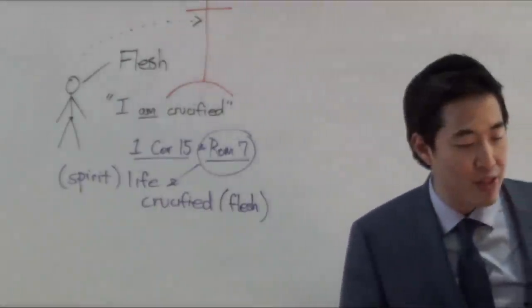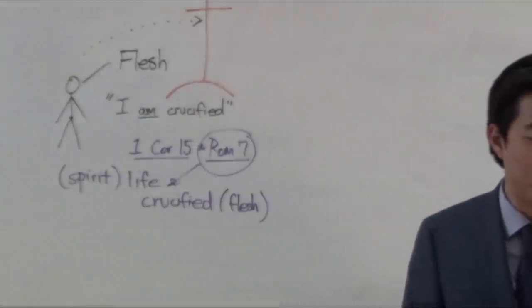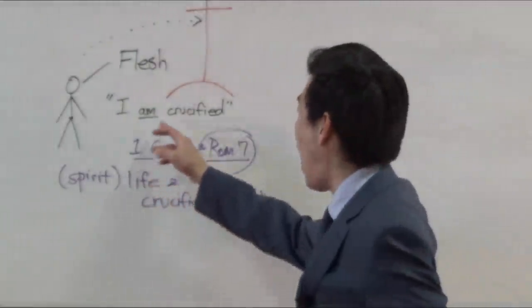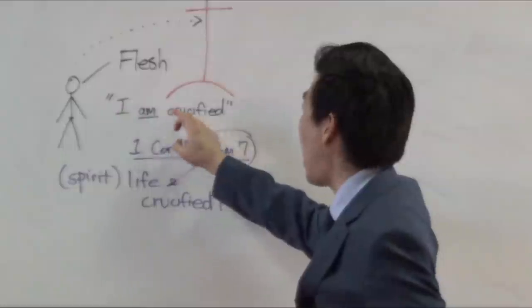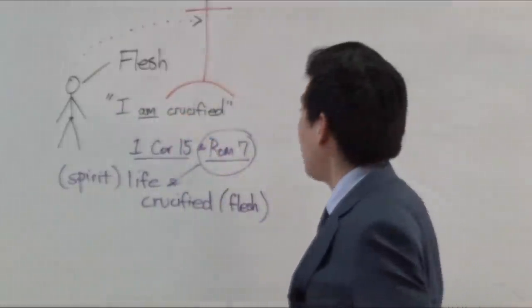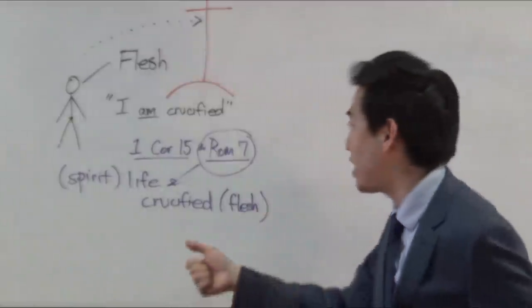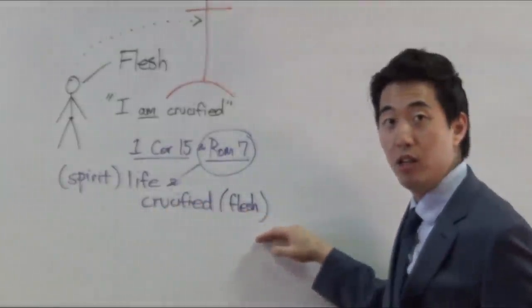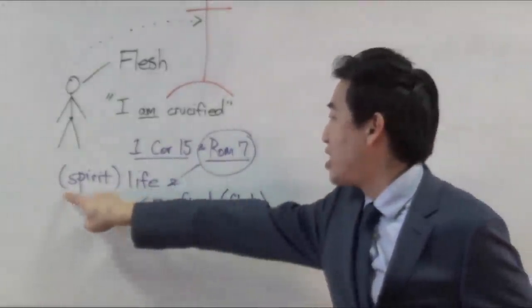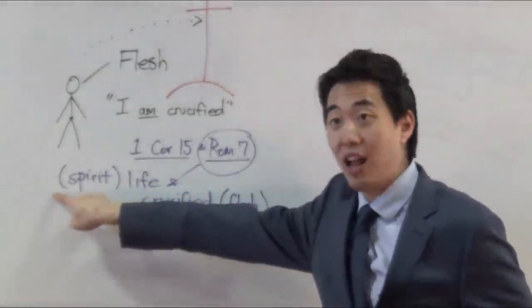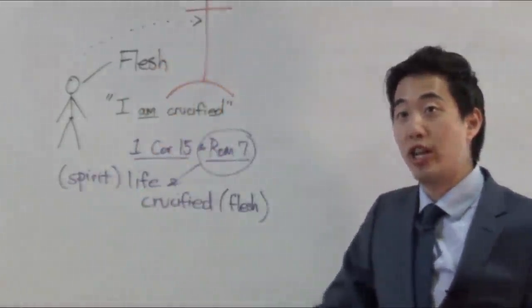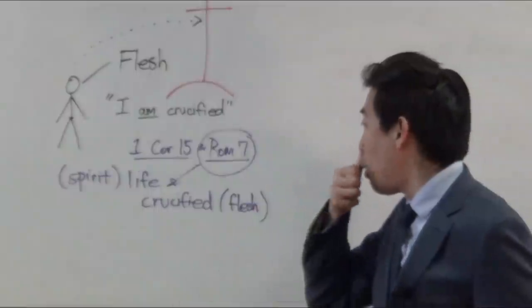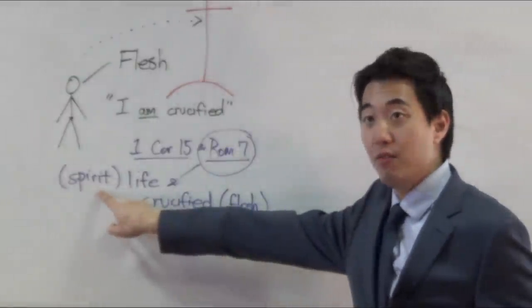For I know that in me, that is, in me what? That is what? In my flesh. See that? There's your one life here. Dwelleth no good thing. For to will is present with me. There's your spiritual nature there. But how to perform that which is good, I find not. That's spiritual side. For the good I would, spiritual, I do not, flesh. But the evil which I would not, spiritual, that I do, flesh. You get that now? Duality of nature. Now, if I do that I would not, it is no more I that do it, but here it is again. Sin that dwelleth in me. Verse 22. For I delight in the law of God. Spiritual. And then he explains here. After the what? Inward man. So that's why Paul is saying that I die daily. 1 Corinthians 15. I am crucified. Galatians chapter 2. Why does he put that present tense? It's because this guy who wants to do evil has to be present tense killed. It has to be dead.